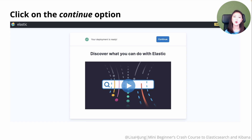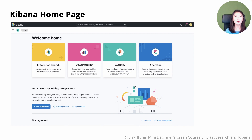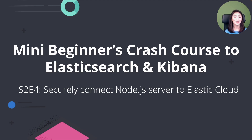Once your deployment is ready, click on the continue option. Then click on the explore on my own option, which will take you to the Kibana homepage. We just created an Elastic Cloud deployment. Next, we'll securely connect our Node.js server to Elastic Cloud. Thank you for watching and I'll see you in the next episode.